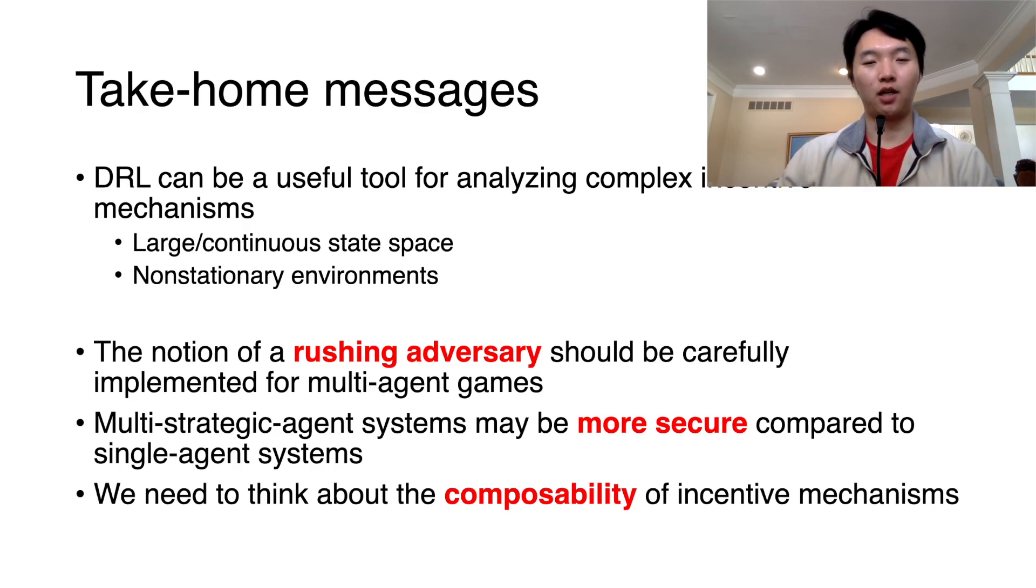There are a few big messages to take away. First, DeepRL is useful for analyzing complex incentive mechanisms with large state spaces and or non-stationary environments. Second, rushing adversaries need to be carefully implemented when studying multi-agent games. Third, multi-strategic agent systems may be more secure compared to single agent systems. Finally, we need to be careful when composing incentive mechanisms, like in Casper FFG, as new vulnerabilities can develop. Thank you.